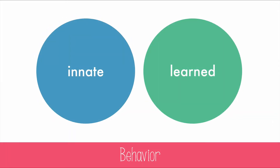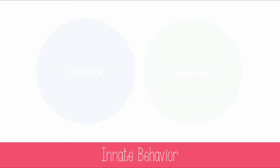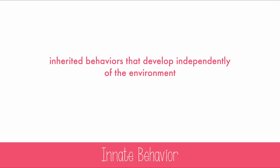Animal behaviors can be divided into two general categories: innate and learned behaviors. This video will focus on the innate behaviors. Innate behaviors are the inherited behaviors that develop independently of the environment. This means that they're genetically programmed in all of the individuals of a species.